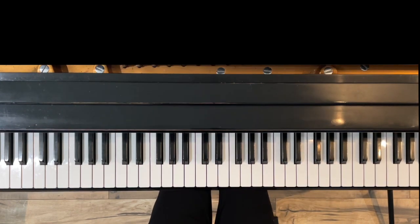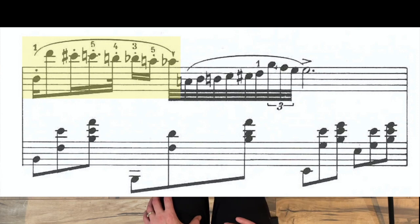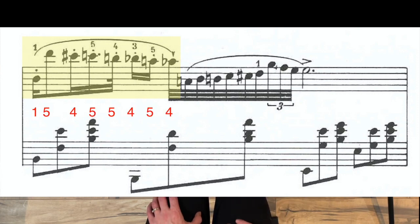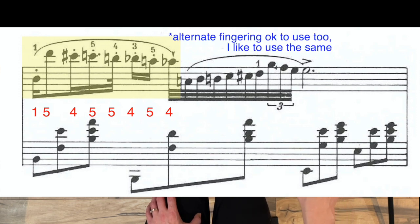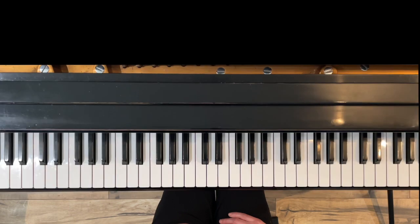Now when we get to measure 24, the first eight notes are the same notes, and you'll actually use the same fingering for them as well: 1-5-4-5-5-4-5-4. However, look at the rhythm — it's a lot different. We've got to navigate the rhythm first, so let's stick with the first three eighth notes.